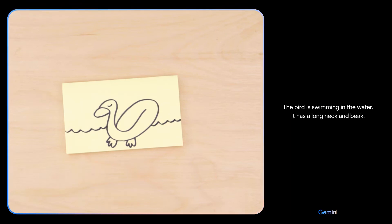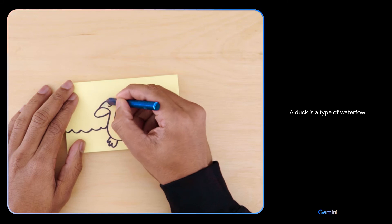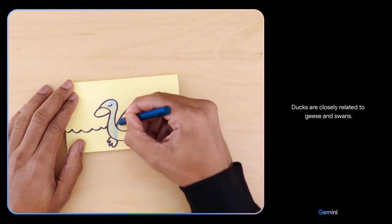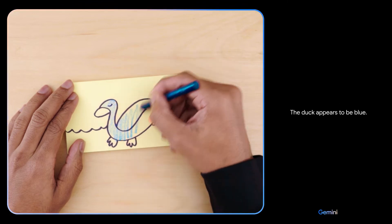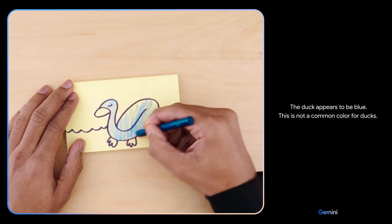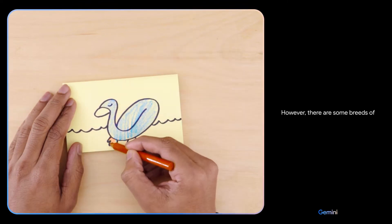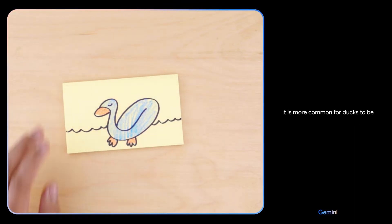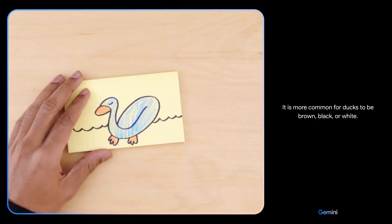Yes, a duck is a type of waterfowl in the family Anatidae. Ducks are closely related to geese and swans. The duck appears to be blue. This is not a common color for ducks, however there are some breeds of blue ducks. These are typically not as common as other duck breeds. It is more common for ducks to be brown, black or white. Are you sure? What the quack! I was just talking about a blue duck and now you're holding one. It looks like blue ducks are more common than I thought.